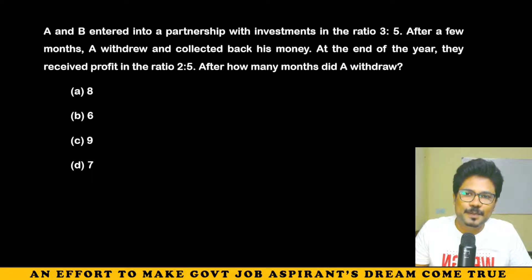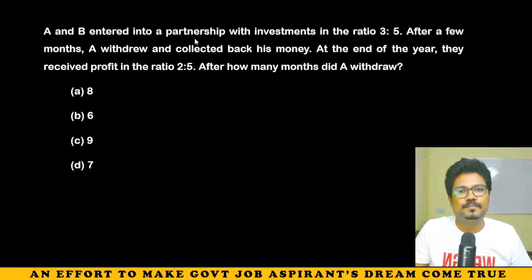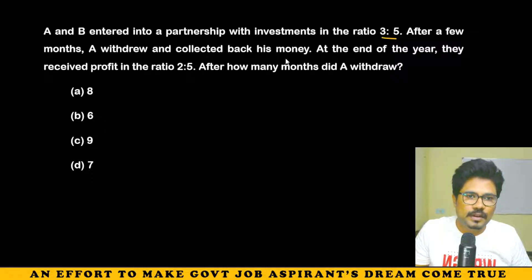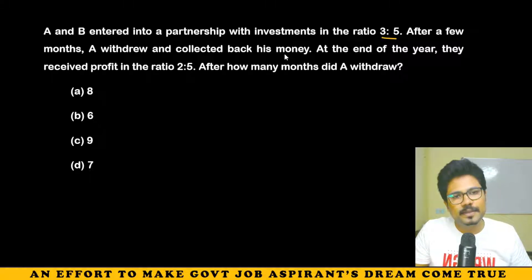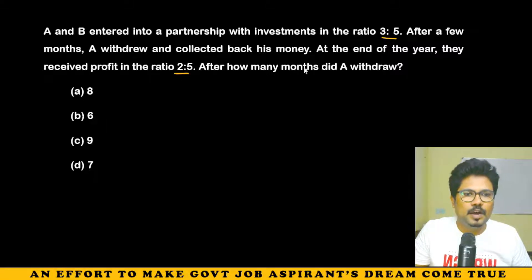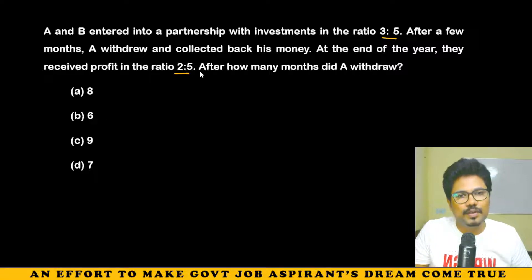Now, the first question: A and B entered into a partnership with investments in the ratio of 3 is to 5. After a few months, A withdrew and collected back his money. At the end of the year, they received profit in the ratio of 2 is to 5. How many months did A invest before withdrawing?